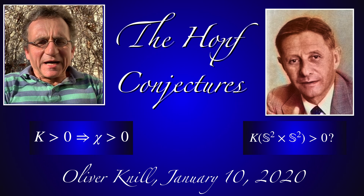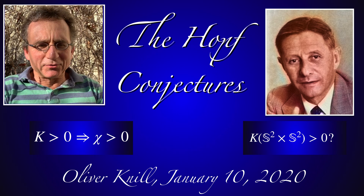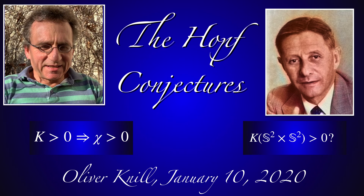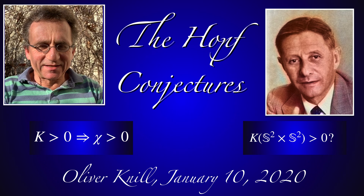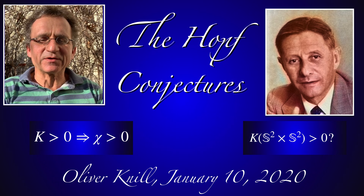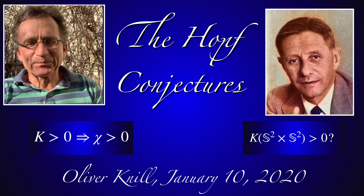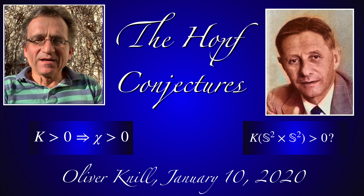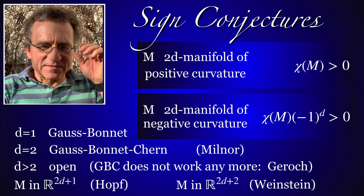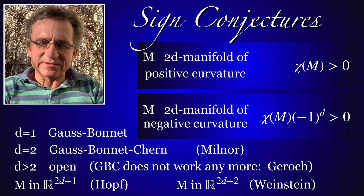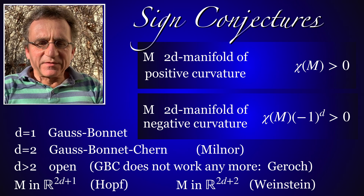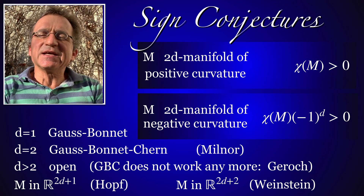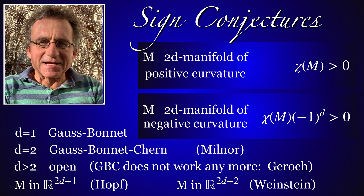The Hopf conjectures are about 90 years old. One of the conjectures asks whether positive curvature implies positive Euler characteristic. The second asks whether positive curvature is possible on the product of two spheres. The sign conjecture of Hopf deals with even-dimensional Riemannian manifolds: is it true that positive curvature implies that the Euler characteristic is positive, or that negative curvature leads to the expected sign?